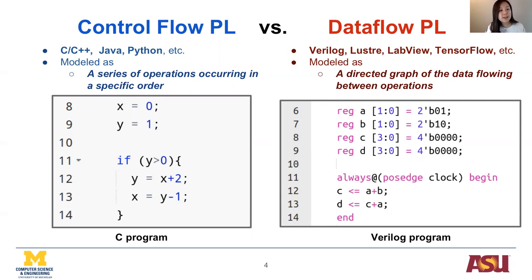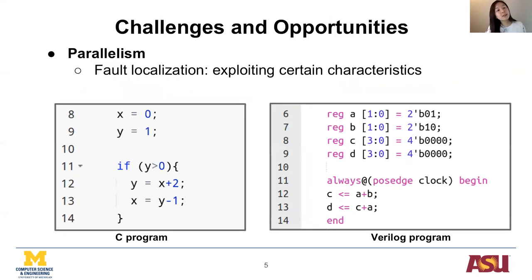Software defects in dataflow PL can lead to severe consequences. Unlike control flow PL, dataflow programs are modeled as a directed graph of data flowing between operations. To our knowledge, no current research supports APR for dataflow PL. Unlike control flow PL where instructions are sequentially executed, in dataflow PL, statements are often executed in parallel.